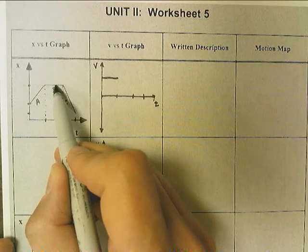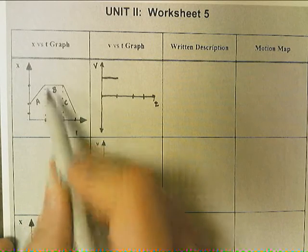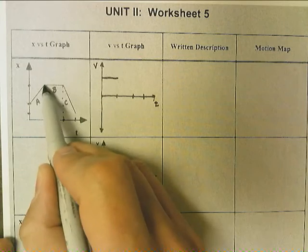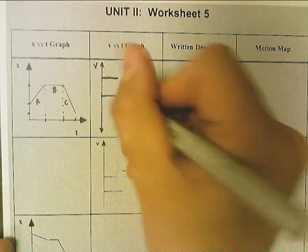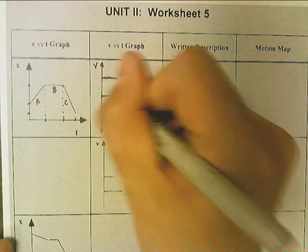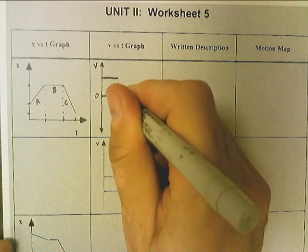Now, its position appears to stop changing for a certain amount of time. So it's sitting around, which means its velocity is now going to be zero.